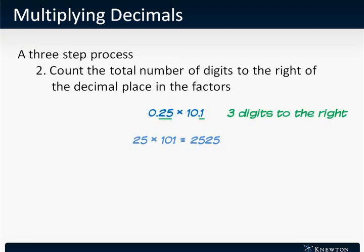Step two, we count the total number of digits to the right of the decimal place in both factors. There are two digits to the right of the decimal place in 0.25 and one in 10.1 for a total of three digits to the right of the decimal place.